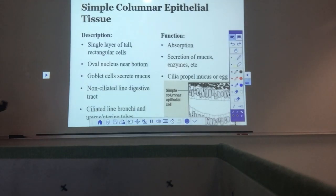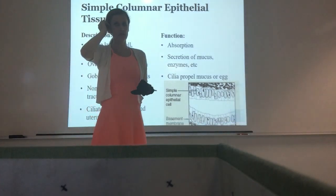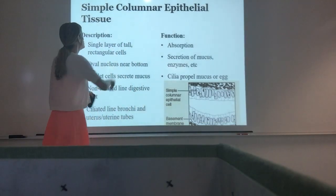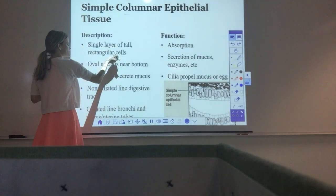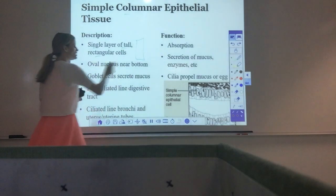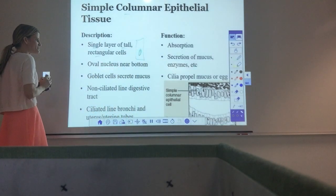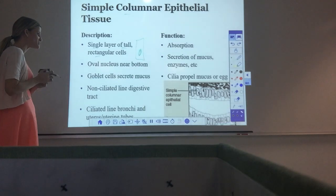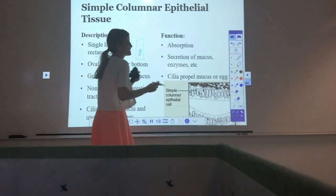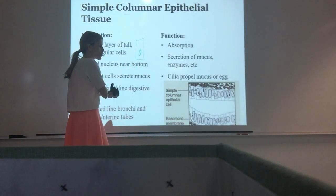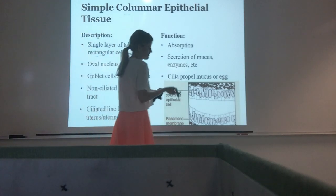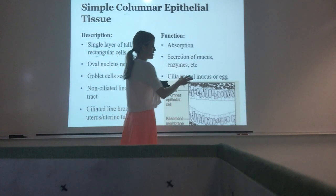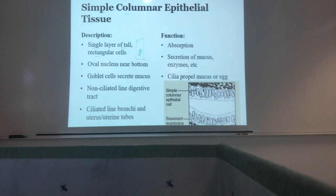Next is simple columnar epithelial tissue: one layer of column-shaped cells. The cells are tall rectangles, with the nucleus normally toward the bottom. Sometimes we'll see goblet cells present, which can secrete mucus. Sometimes we'll see cilia present. These cells are really important for absorption and can be important for secretion of mucus. We find them in parts of the GI tract and parts of the reproductive tract, where cilia move the egg along.